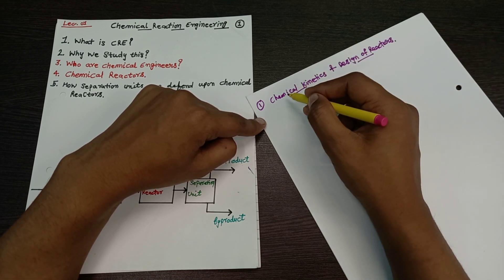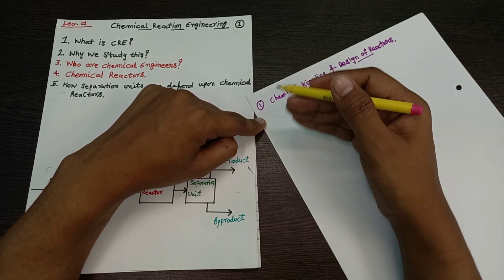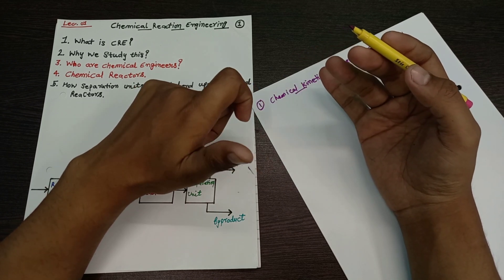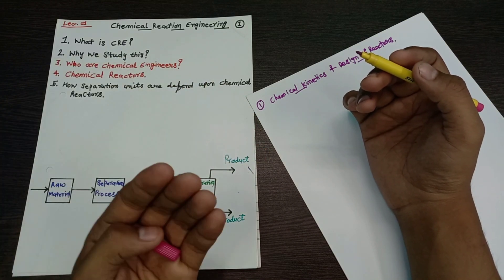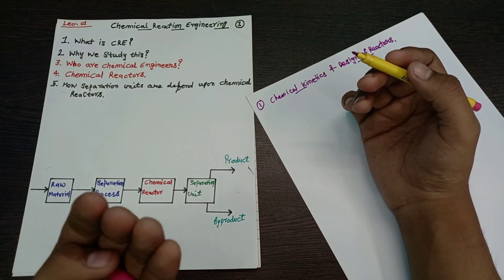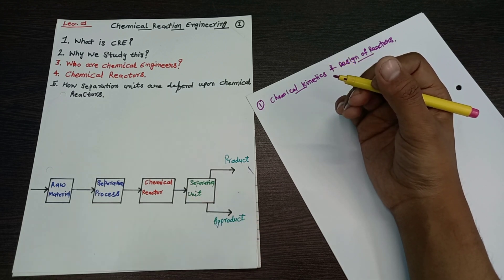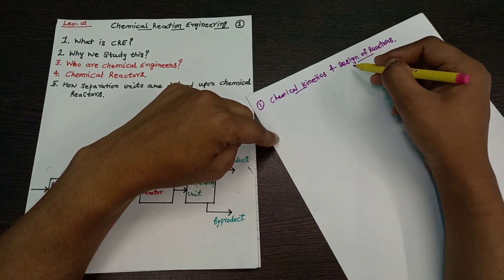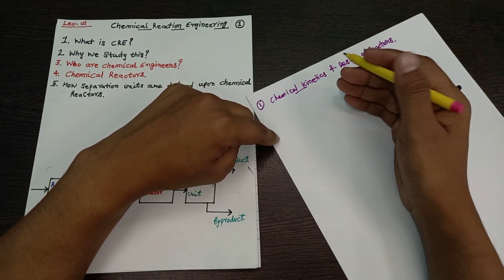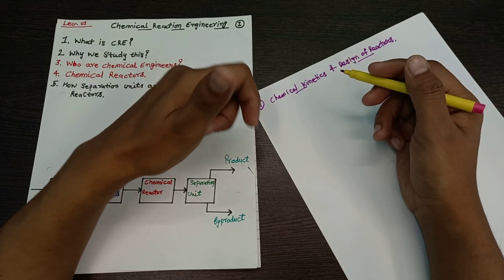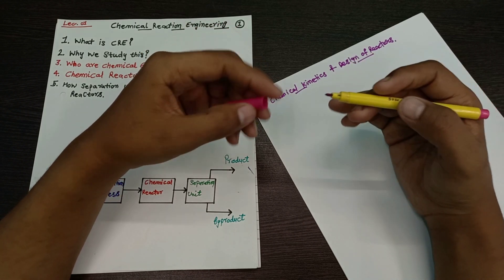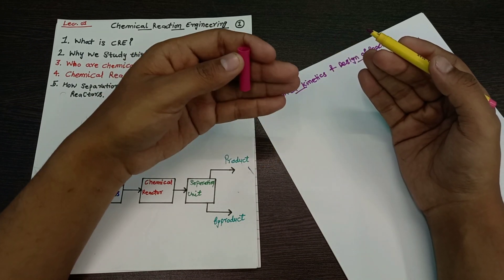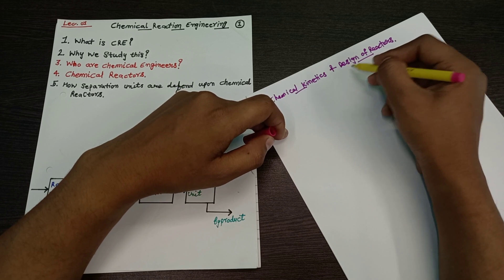In chemical kinetics, we study the speed of reaction, rate of reaction, order, molecularity, series reactions, and parallel reactions. In reactor design, we derive the performance equations of reactors, study the combination of reactors, and select the best reactor for our process.